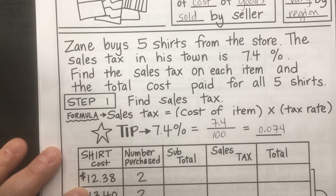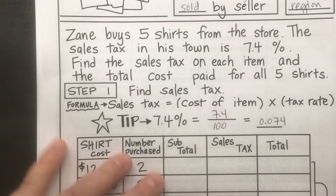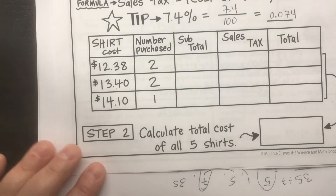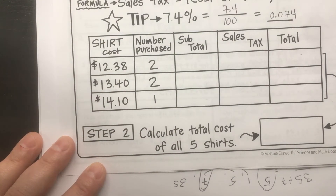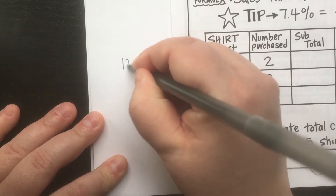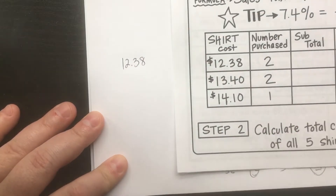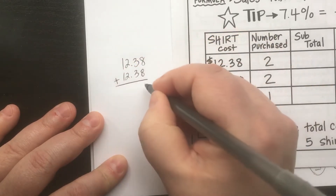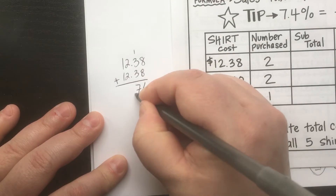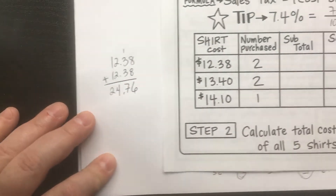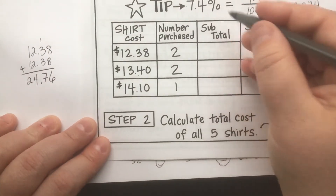Zane bought two shirts, each at $12.38. You can either add it two times or multiply by two — doesn't matter. Two times $12.38 gives us a subtotal before tax of $24.76.